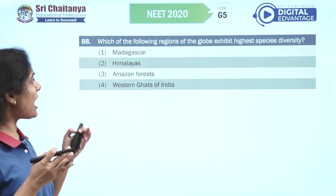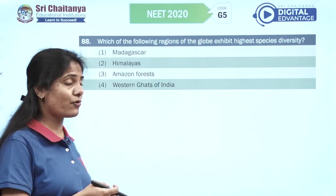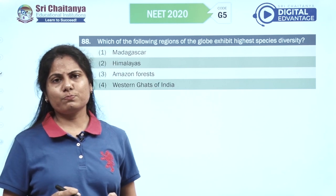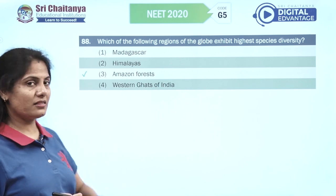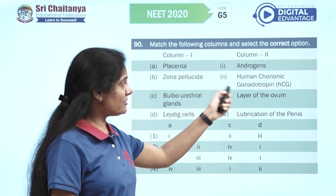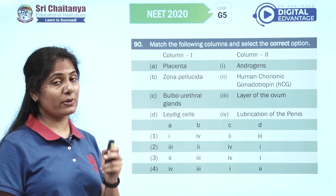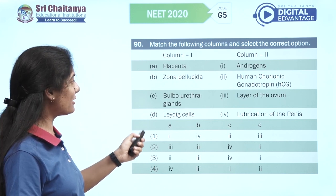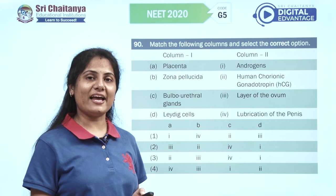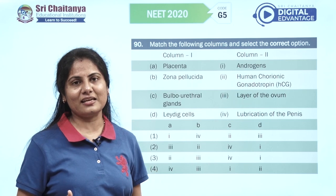Which region exhibits highest species diversity? None other than the Amazon rainforests — the third option. Then another match-the-following: placenta secretes HCG (human chorionic gonadotropin); zona pellucida is the layer of the ovum blocking polyspermy; bulbourethral glands help with lubrication of the penis; Leydig cells are responsible for androgens. Hope you all got them right — wishing you loads of luck and great success in life.